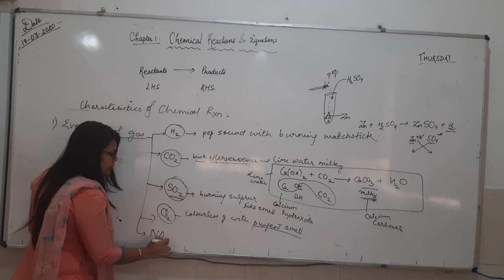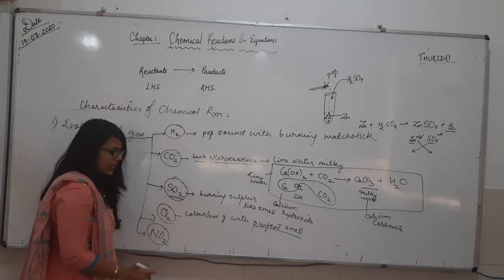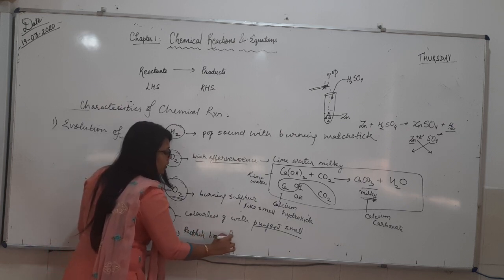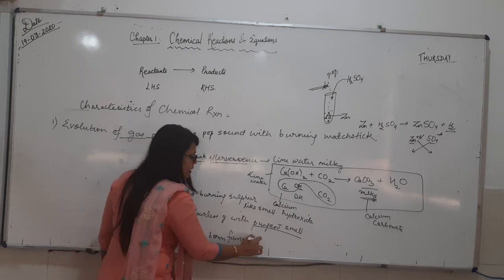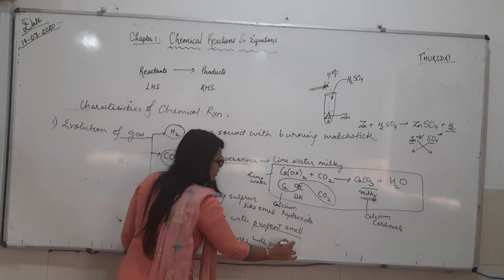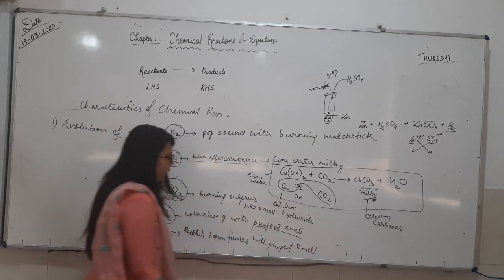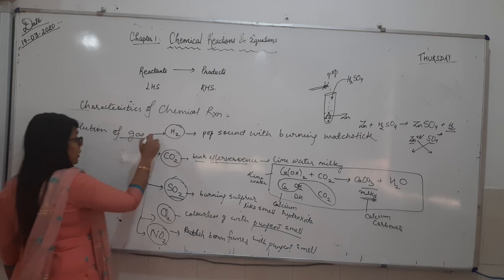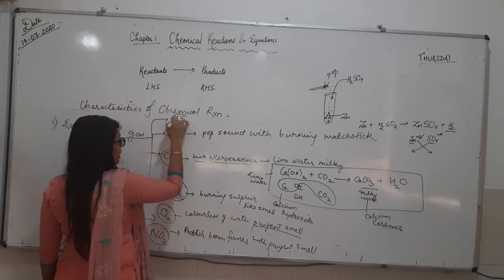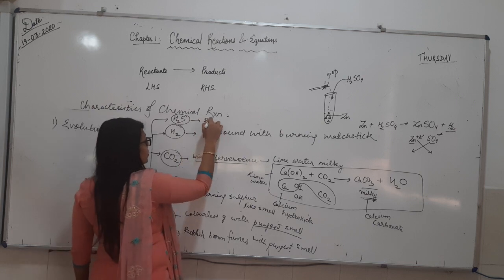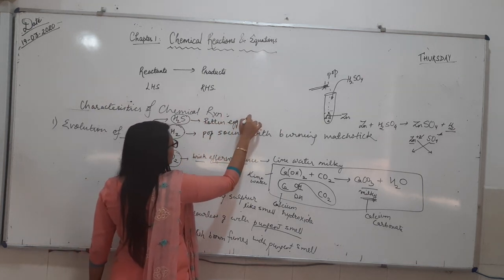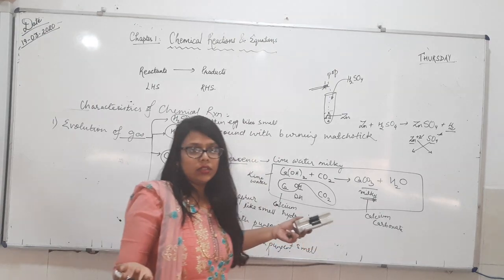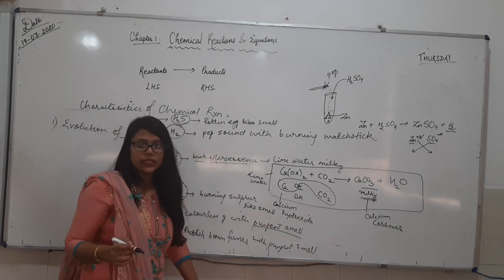For NO2 — nitrogen dioxide — reddish brown fumes will be liberated with a pungent smell. To help you remember, for chlorine it will be colourless gas, and for NO2 it will be reddish brown gas. Along with that, H2S gas — which can also be asked — produces a rotten egg-like smell. So if a gas with rotten egg-like smell is evolved, determine that it is H2S.